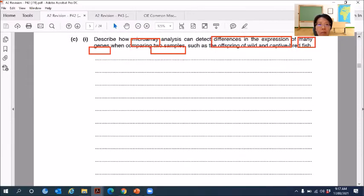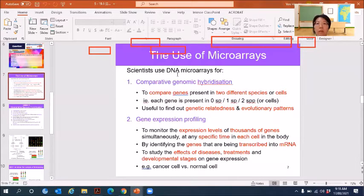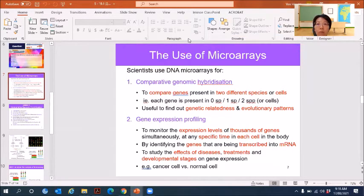So you need to write five points. So you have learned that microarray is used for two purposes. Number one is comparative genomic hybridization. So this one is you want to compare the presence of certain genes between two sets of samples. So it can be two different species.